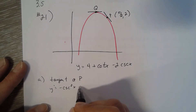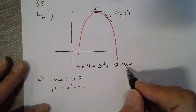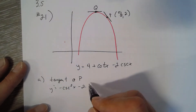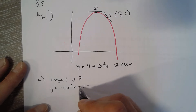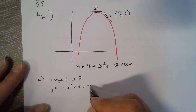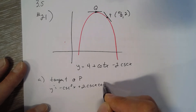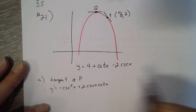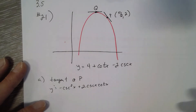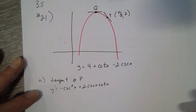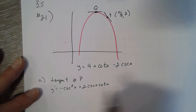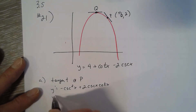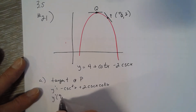The derivative of cotangent is negative cosecant squared x, minus 2 times the derivative of cosecant, which is negative cosecant cotangent — so that becomes positive 2 cosecant x cotangent x. That's our derivative.